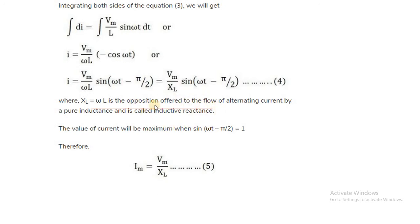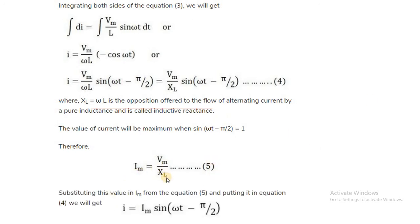XL is called the inductive reactance, denoted by capital X suffix capital L. The formula of XL equals omega L, where omega equals 2 pi f, so the formula of XL equals 2 pi f L. Inductive reactance is the opposition offered by an inductor to the flow of alternating current. The value of Im equals Vm upon XL, and using this, the current equation is i equal to Im sin omega t minus pi by 2.